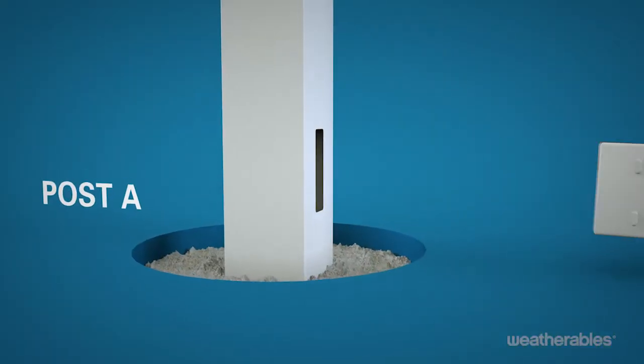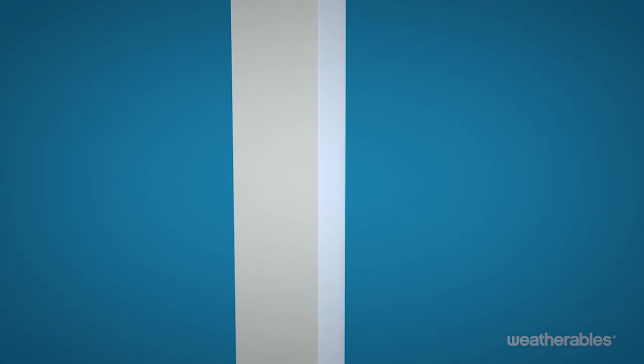Next, slide the bottom rail and mid rail into the routed holes in post A.